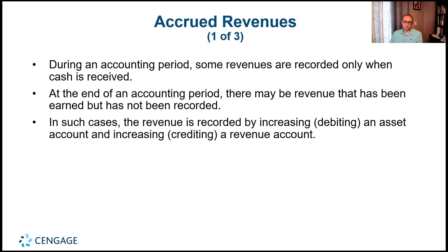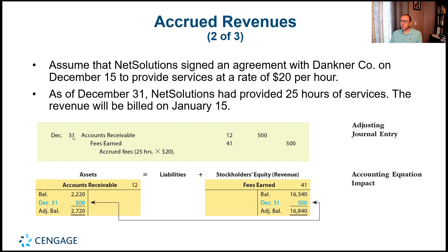Let's see an example. Assume that Net Solutions signed an agreement with Bankner Company on December 15th to provide services at $20 per hour. As of December 31st, Net Solutions has provided 25 hours of service. The revenue will be billed on January 15th. So during December we provided 25 hours but didn't bill the customer yet — there is still revenue that has been earned. We record 25 hours × $20 = $500.